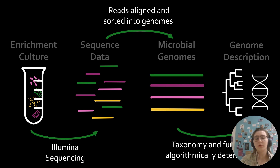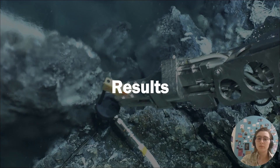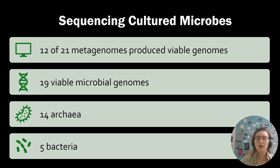Our sequences were obtained using Illumina sequencing. The sequencing data was then aligned and sorted into genomes, which could then be used to determine taxonomy and function of each genome. Of our 21 metagenomes, only 12 produced viable genomes. These viable genomes were the ones that could be used for further analysis.